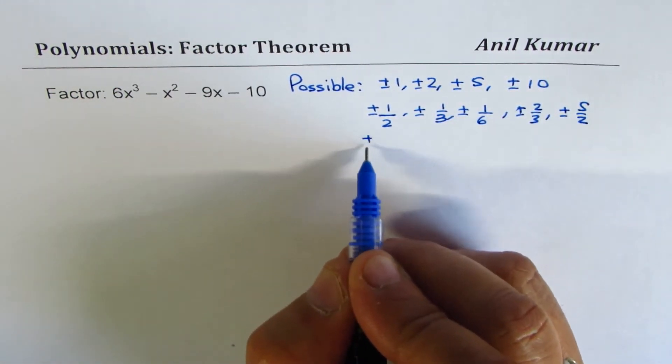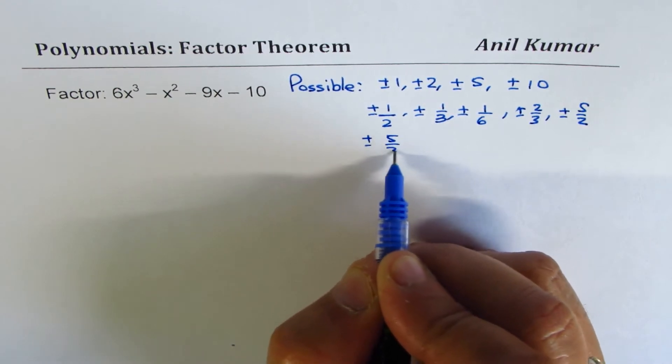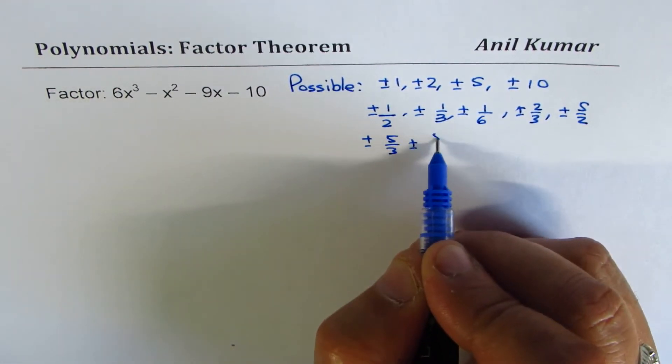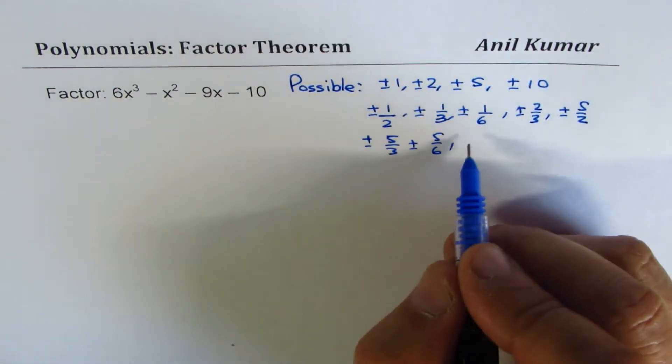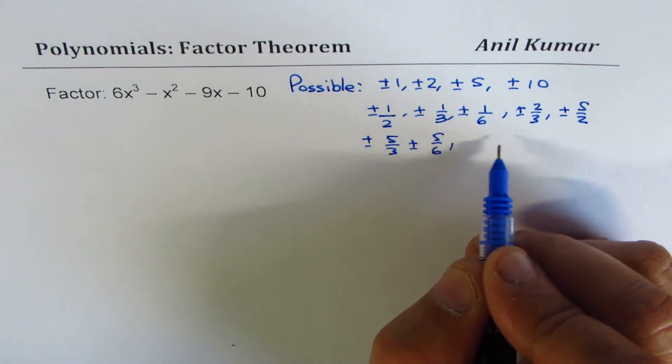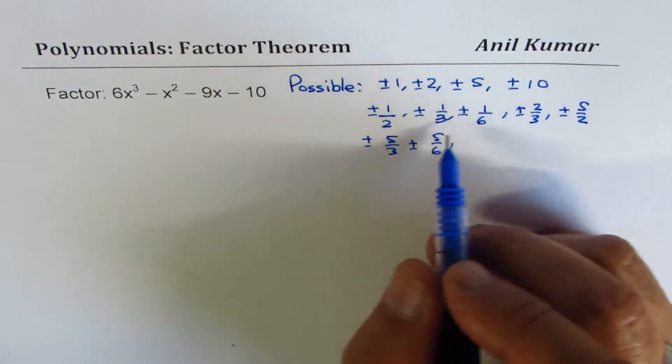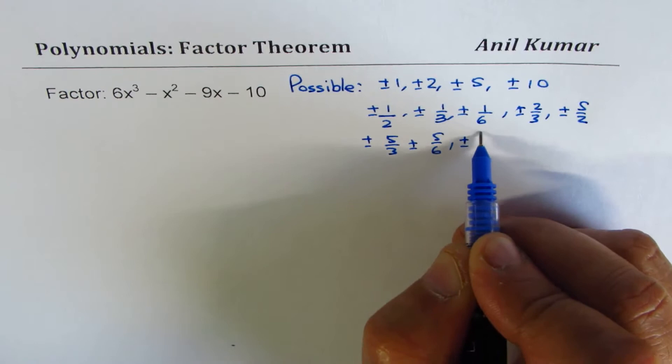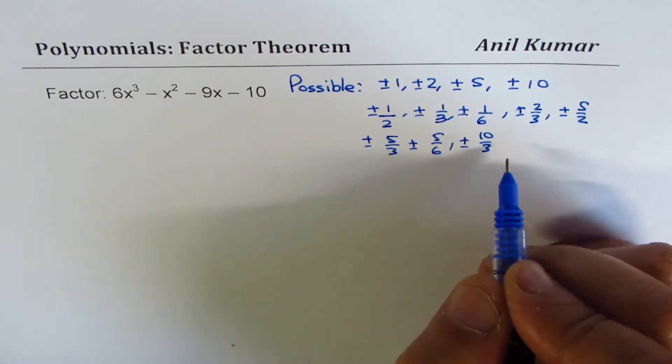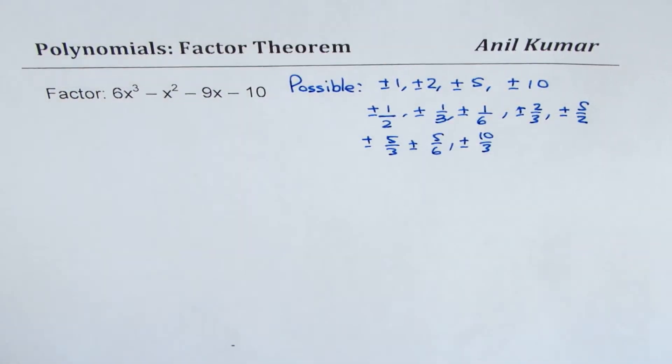And then we could have ±5/2, ±5/3, ±5/6, and then we could have 10/2 which is 5, ±10/3, and 10/6 is 5/3 which is already covered. So these are all the possible combinations.